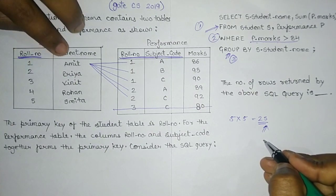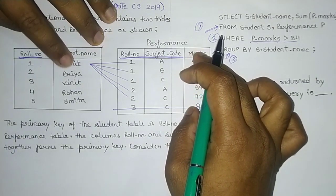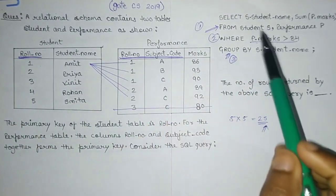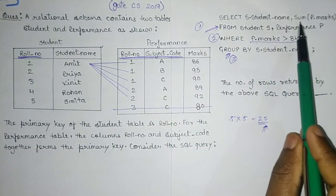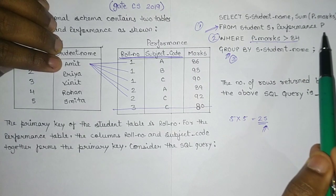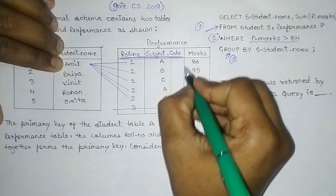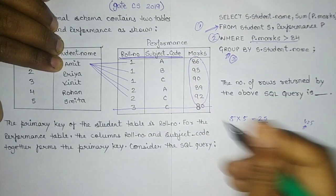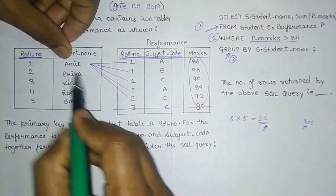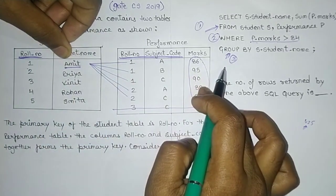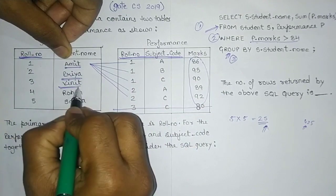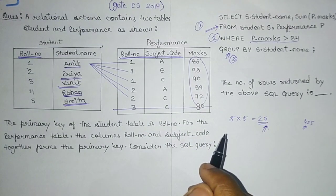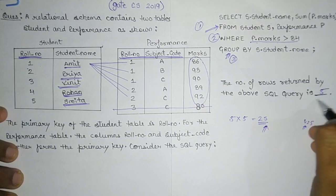Grouping by student name produces a group for Amit with five records, a group for Priya with five records, and similarly five groups total for five distinct names. From each group, we select the student name and sum of P marks. So we get one row per student: Amit with a sum, Priya with a sum, Vinith with a sum, Rohan with a sum, and Smita with a sum. The query returns five rows. The correct answer is 5.